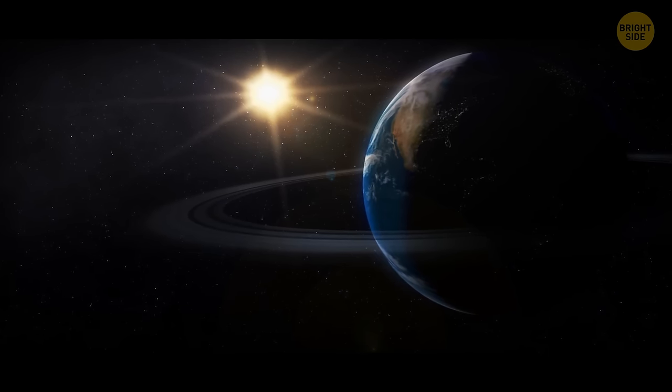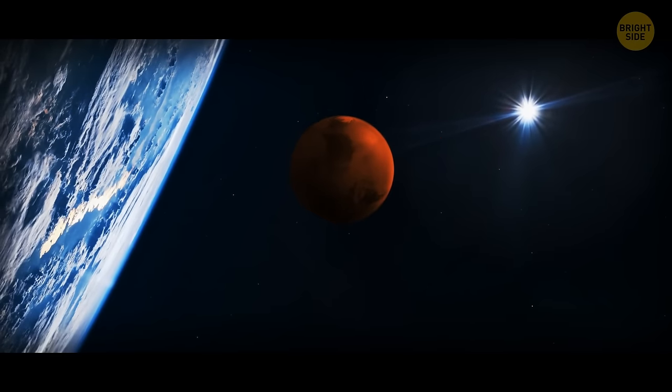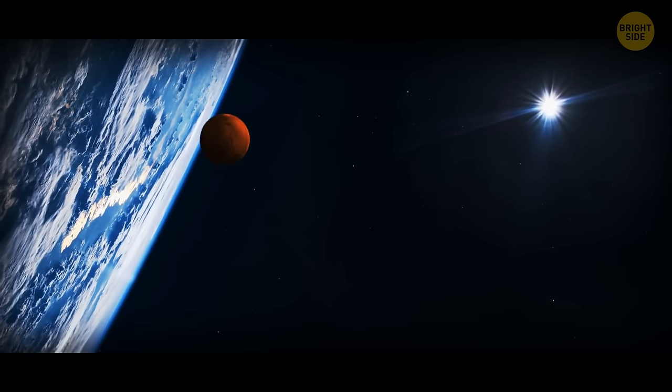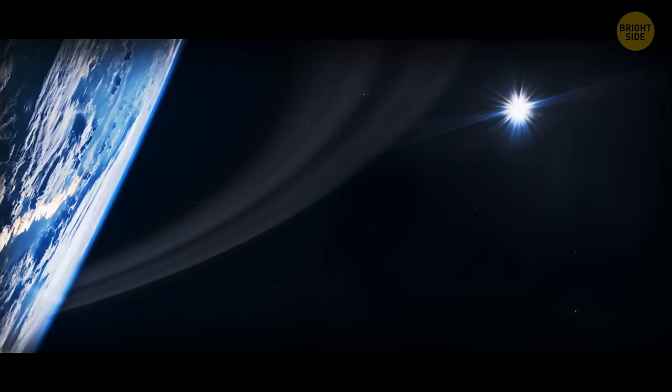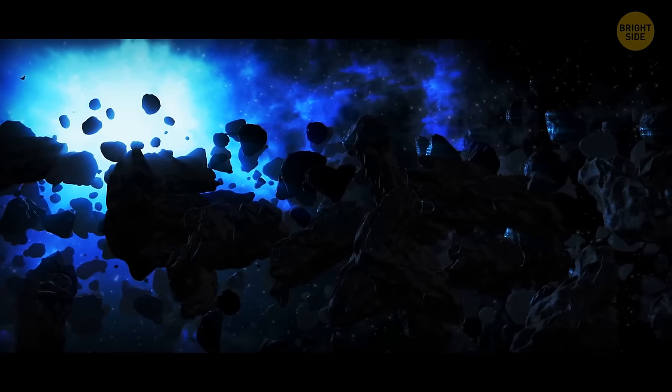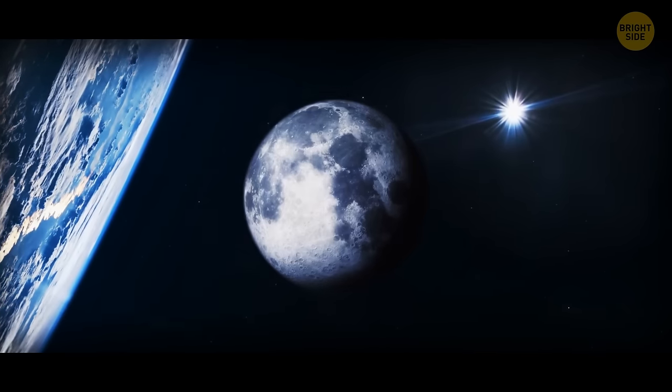Some theories even say that Earth used to have a ring system. A long time ago, our planet collided with a Mars-sized object, which most likely resulted in a dense ring of particles and debris. But our story was a bit different than the outer planets, and those rings probably combined and formed the moon.